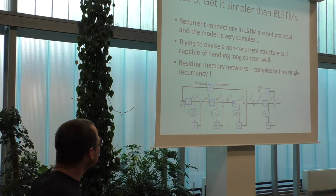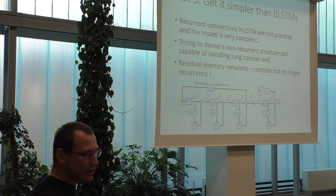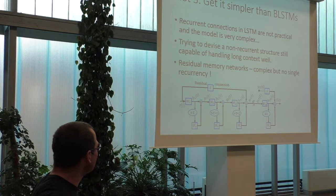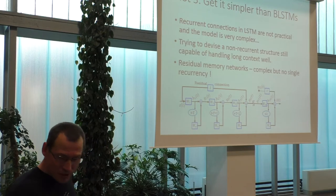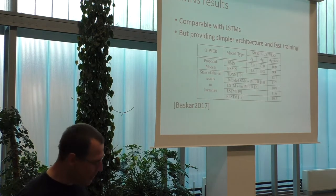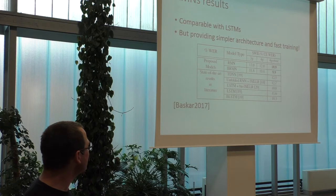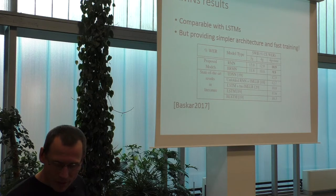Another topic is getting things simpler than BLSTMs, because they are really complicated with their recurrent connections. We were going after an architecture that would be simpler and still powerful. That's how Karthik Bhaskar came up with residual memory networks — actually not as easy as a simple DNN, but there is no single recurrent link. After some experimenting, it seems they are as good as LSTMs with simpler architecture and faster training. Those were three hot things that seem quite promising.